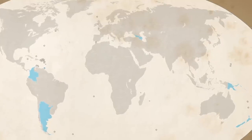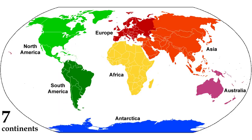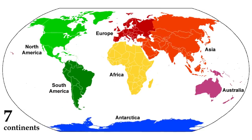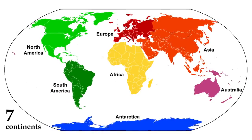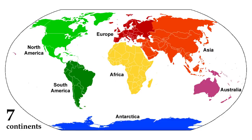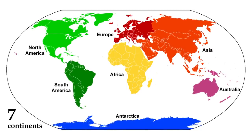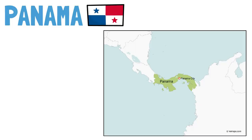The number of continents also varies depending on who you ask. For the purposes of this video, we're going to assume that there are seven continents: Africa, Asia, Oceania, Antarctica, Europe, North America, and South America. So let's start with the perfectly transcontinental countries — the ones on the thumbnail plus a couple more.